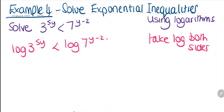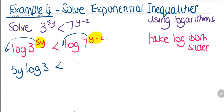Now, what we've learned about exponents is that we rewrite them in front of our logs. So we'll have 5y log 3 is less than (y minus 2) log 7. I'm going to put this in brackets. Now we need to multiply out this bracket, so we've got y times log 7.